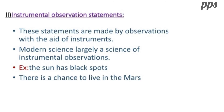Instrumental observation statements: these statements are made by observations with the aid of instruments. Modern science is the science of instrumental observations. For example: the sun has black spots, there is a chance to live on Mars.